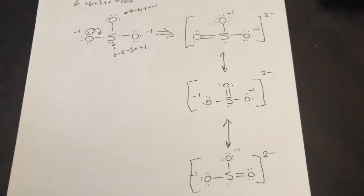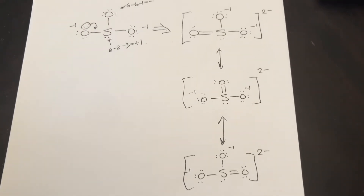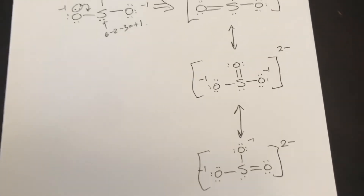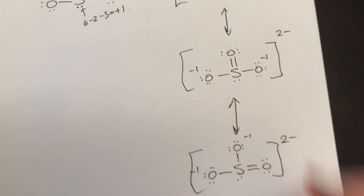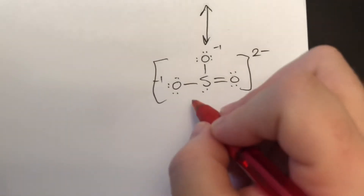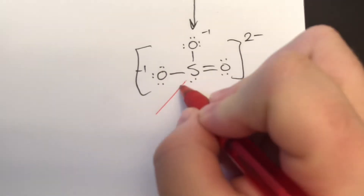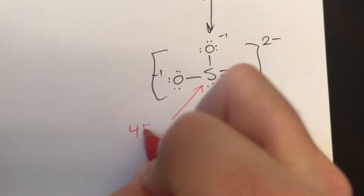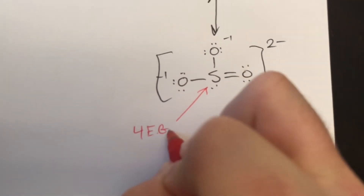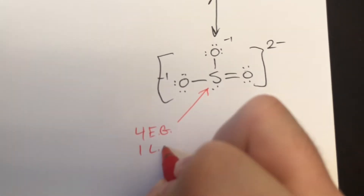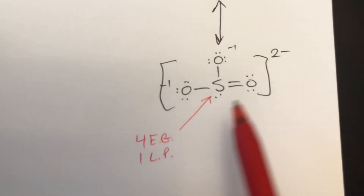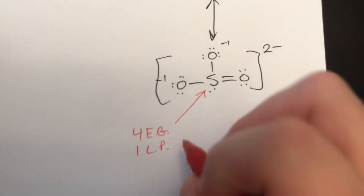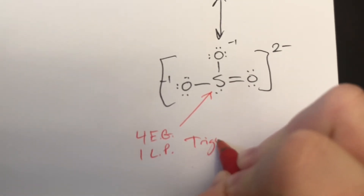Those are our three resonance structures. Let's look at the geometry. The sulfur has four groups, one of which is a lone pair. Four groups would make it some variation of a tetrahedral, and one lone pair makes it trigonal pyramidal.